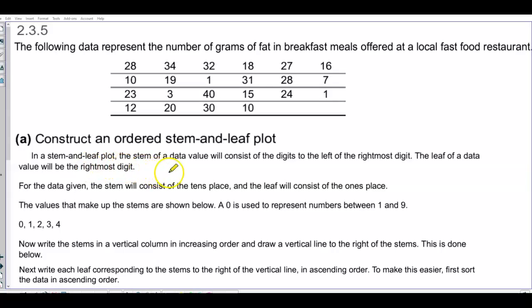In a stem and leaf plot, the stem of the data value will consist of the digits to the left of the rightmost digit, and the leaf of the data value will be the rightmost digit. So for the data given, the stem will consist of the tens place, and the leaf will consist of the ones place.